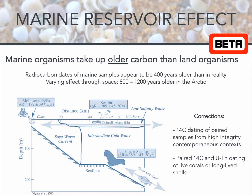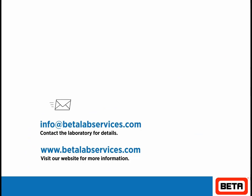It is important to inform Beta Analytic if your sample is marine in origin or may have a strong connection to marine organisms — for example, a civilization known to consume significant amounts of fish — as well as letting us know the geographic origin of your sample. With this information, we can select appropriate correction methods to ensure you receive the most accurate date ranges for your research.